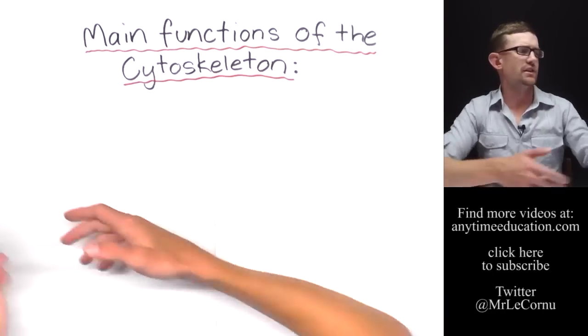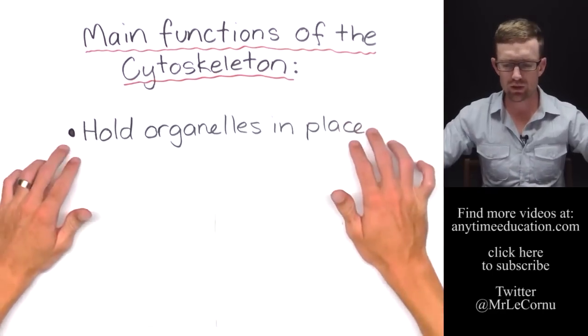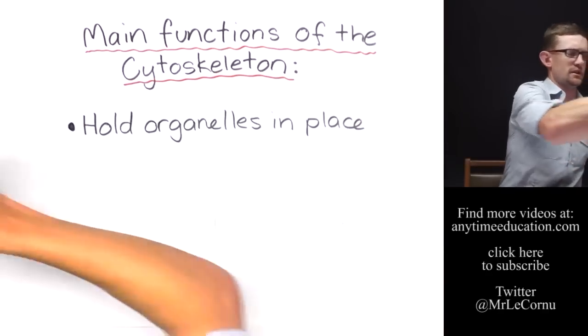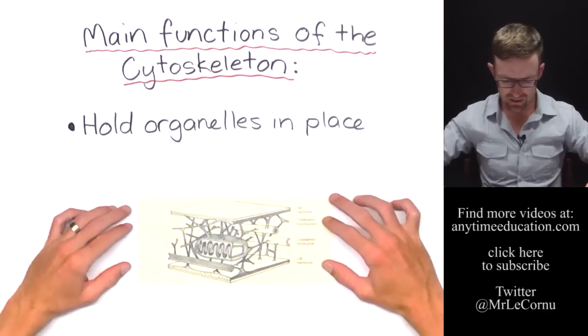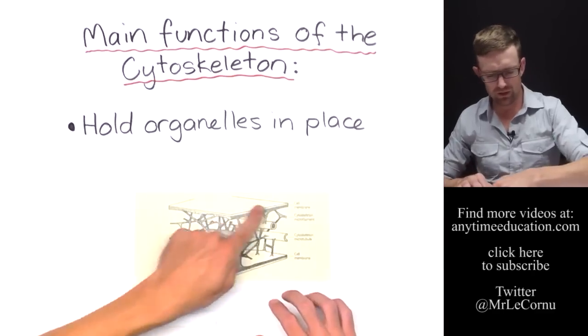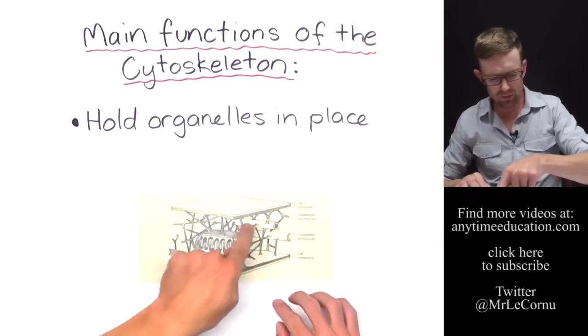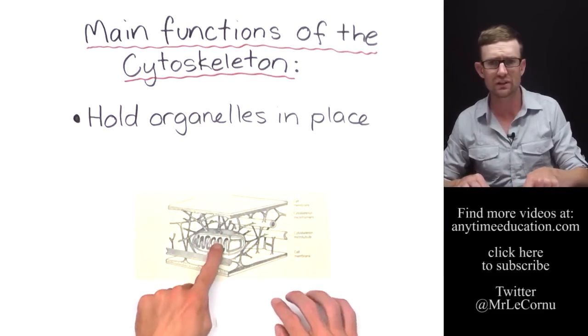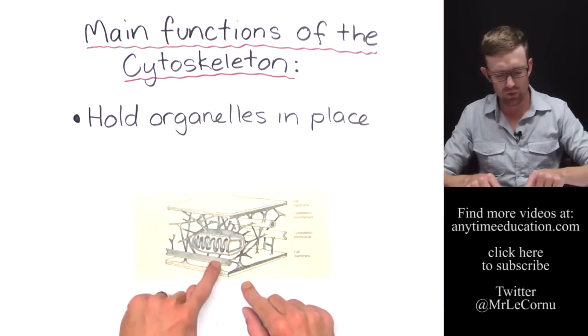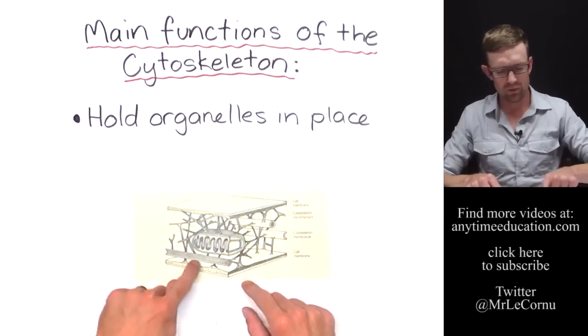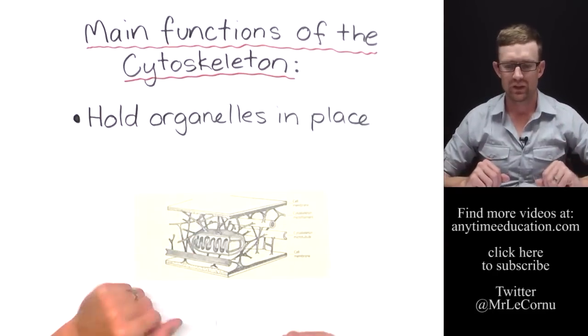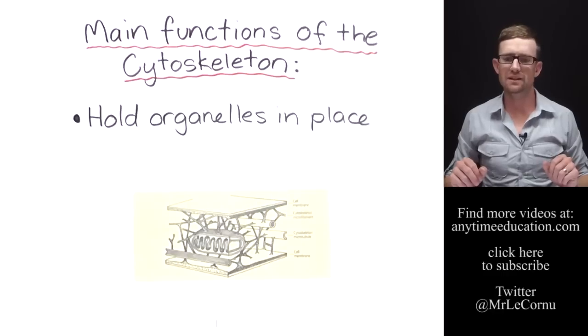The third main function of the cytoskeleton is to hold the organelles in place, which we've already seen a little bit previously when we just looked at the chloroplast. Here's a diagram showing you cell membrane. Inside, we've got our cytoskeleton. And here we have a mitochondrion. And that mitochondrion, you can see, is held in place by what sort of looks like a scaffolding of cytoskeleton. So holding the organelles in place is an important function of the cytoskeleton as well.